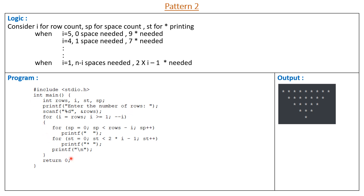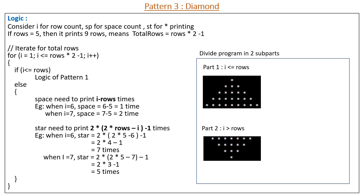Now we go for pattern 3 — the full diamond pattern. It is a combination of both previous patterns: pattern 1 and pattern 2. If rows equals 5, the diamond prints 9 rows because the middle line is common to both patterns, so total rows equals rows multiplied by 2 minus 1. When I enter rows equal to 5: 5 multiplied by 2 is 10, minus 1 means 9 total rows will be printed.